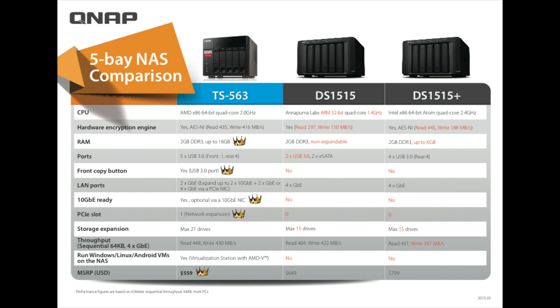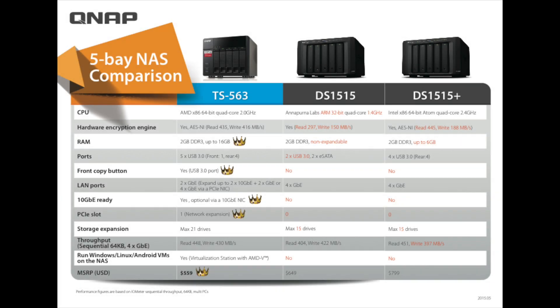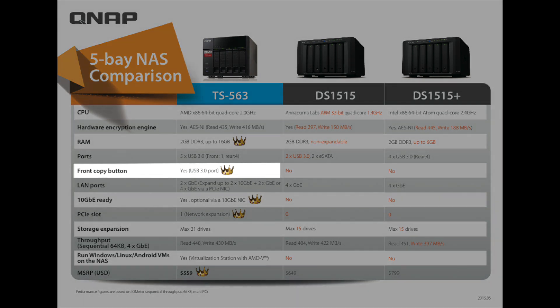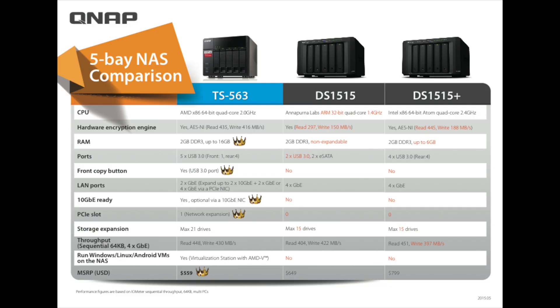Next are the ports on each of the systems. The QNAP TS-563 comes with 5 USB 3.0 ports — 4 in the back, 1 in the front. The DS-1515 comes with 2 USB 3.0s and 2 eSATAs located in the back. The DS-1515+ comes with 4 USB 3.0s in the back. Additionally, the QNAP TS-563 has a front copy button — unique to the QNAP — which you can utilize as an export function. The other two units do not have this.